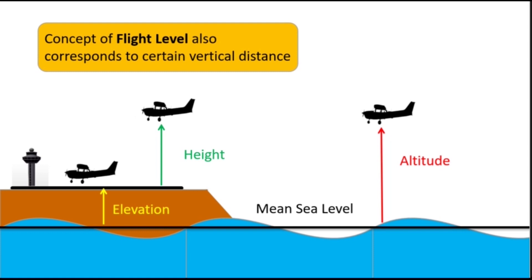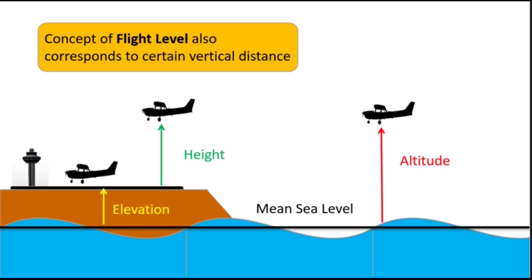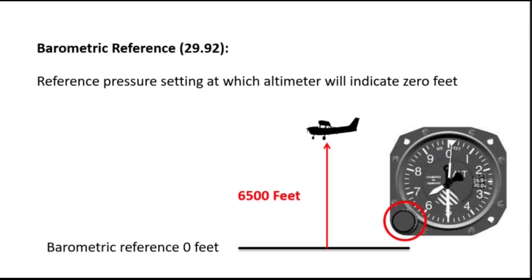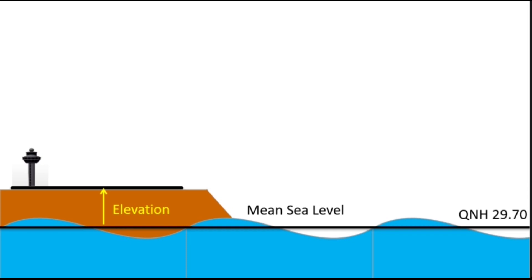The concept of flight level also corresponds to a certain vertical distance. Barometric reference is the pressure setting at which the altimeter will indicate zero feet, and then it measures the vertical distance in relation to this reference level. The pilot can adjust the barometric reference to any level with the help of an adjusting knob. For example, if the pressure at mean sea level is 29.70 inches of mercury and the pilot feeds this as the barometric reference, it will give the altitude of the aircraft.